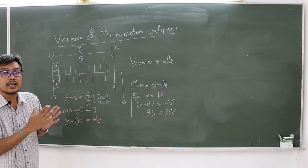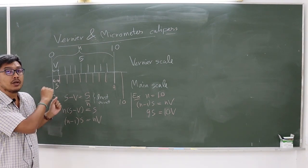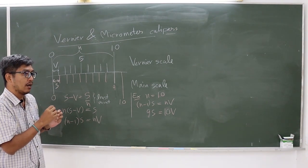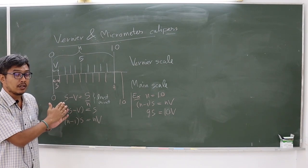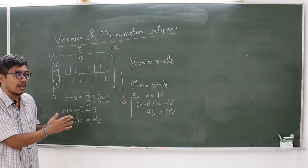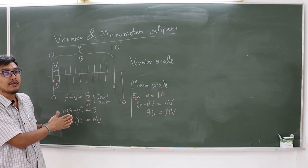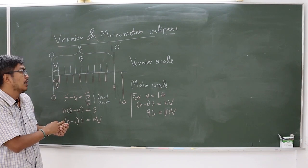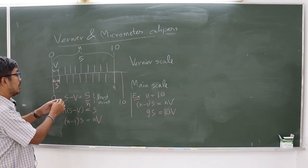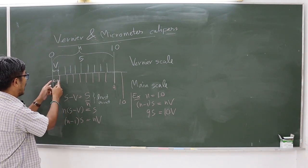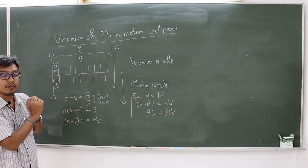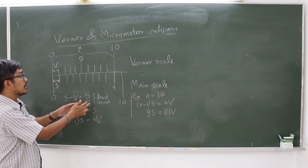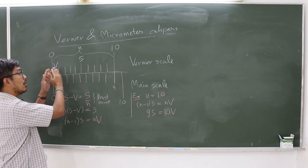When you use any instrument with a vernier scale, you must first check the resolution or least count of the instrument. In this case, the least count is the scale S, or main scale, divided by n, where n is the total number of divisions of the vernier scale.